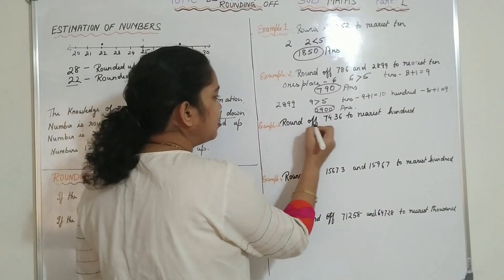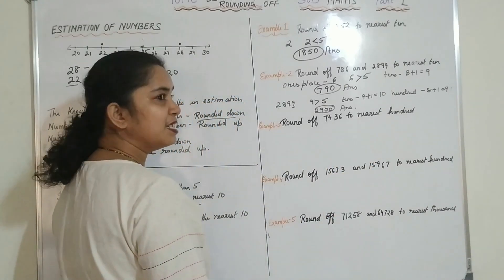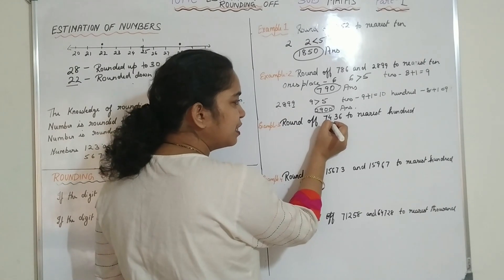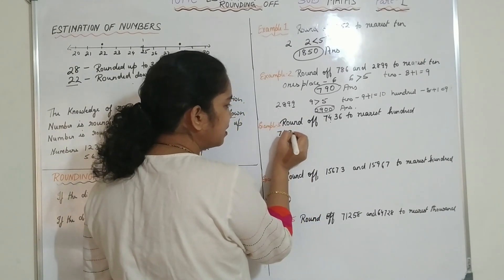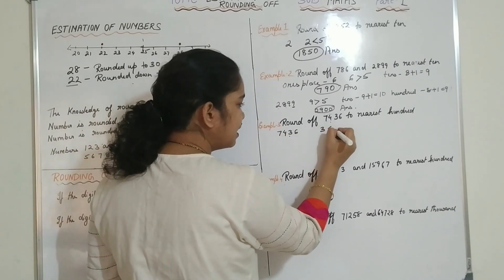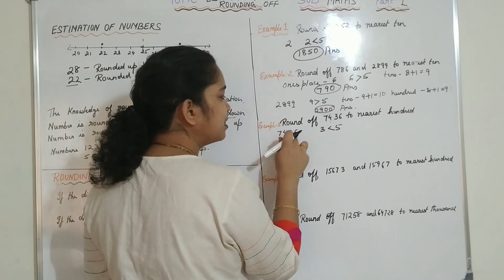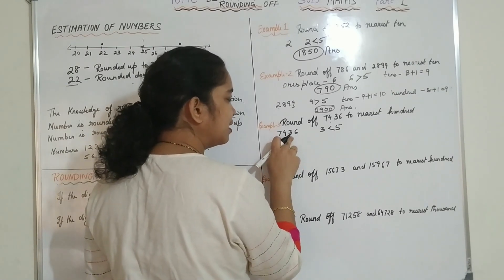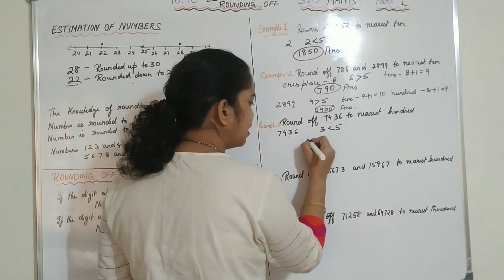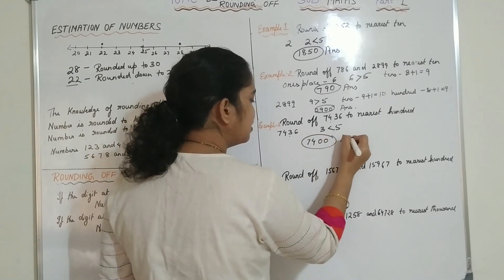Now the third example: round off the number 7436 to the nearest 100. We have to look at the number in the 10s place. The digit in the 10s place is 3, and 3 is less than 5. So the number in the 100s place will remain unchanged, and the digits in the 10s place and 1s place will be rounded down to 0. So the answer will be 7400.